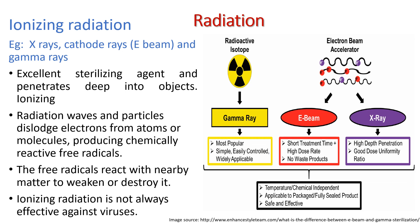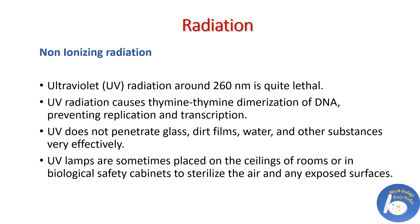Radiation: ionizing radiations are excellent sterilizing agents. They can penetrate deep into objects, dislodge electrons from atoms and molecules, and produce free radicals. These free radicals react with nearby matter to weaken and destroy it. Ionizing radiation can kill spores and microbial cells, but they are not very effective against viruses.